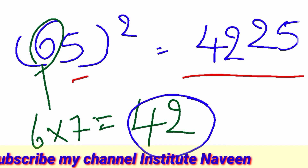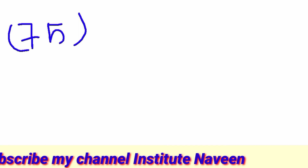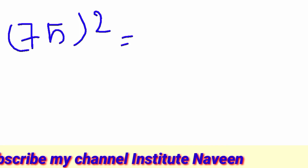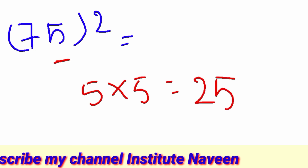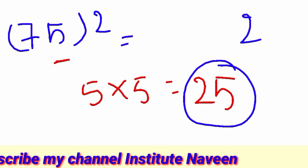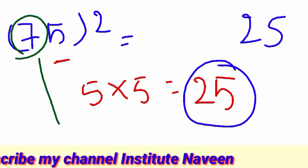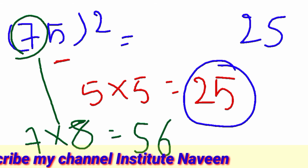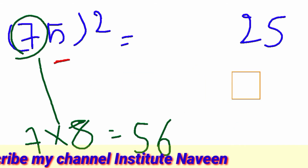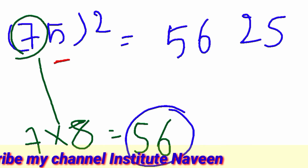Next, 75 squared. 75 squared equal to 5 x 5 is 25. 7 x 8 is 56. If 56 in this scale, this is sum. Answer is 75 squared equal to 5,625.